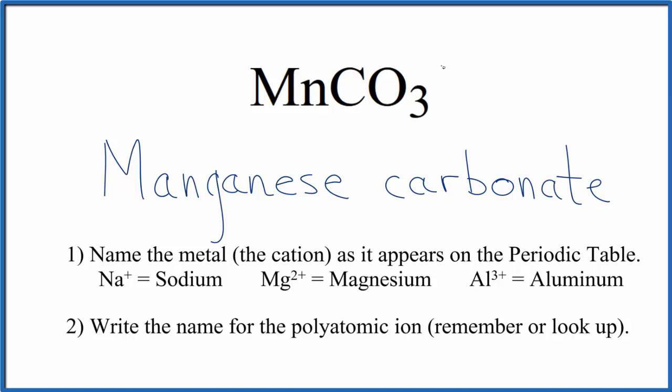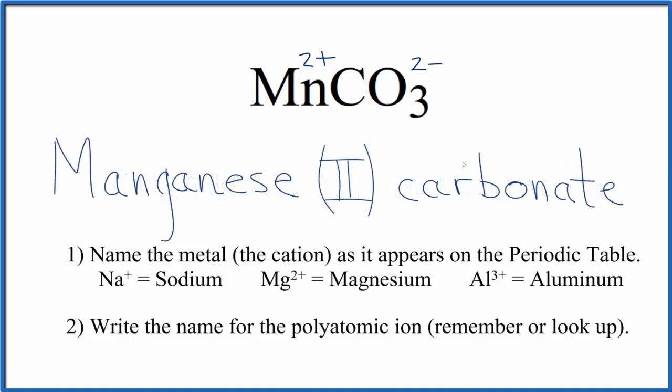You should know that the carbonate ion is 2 minus. That's the whole carbonate ion here, 2 minus. So the manganese has to be 2 plus for those charges to balance. So we're going to put a Roman numeral with parentheses right between the name. So the name for MnCO3 is manganese II carbonate, and this Roman numeral 2 refers to this 2 plus up here on the manganese.